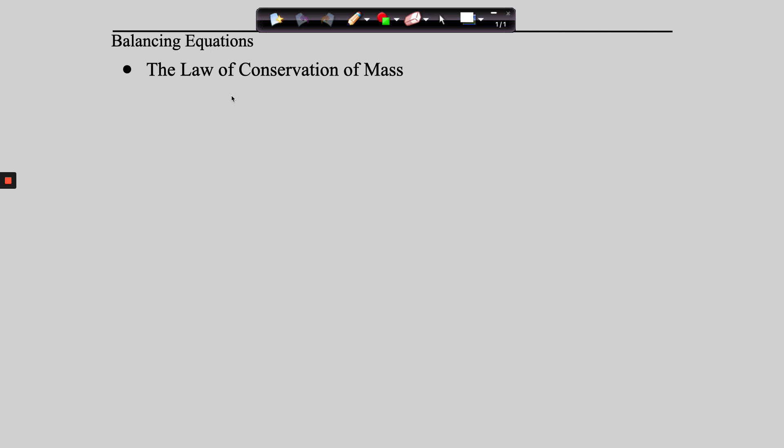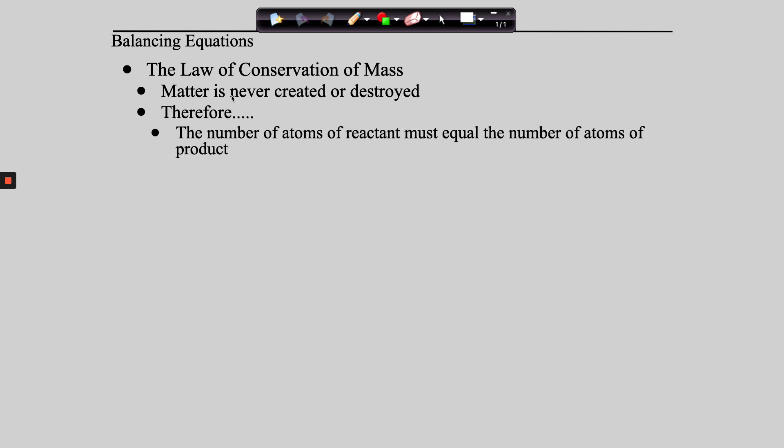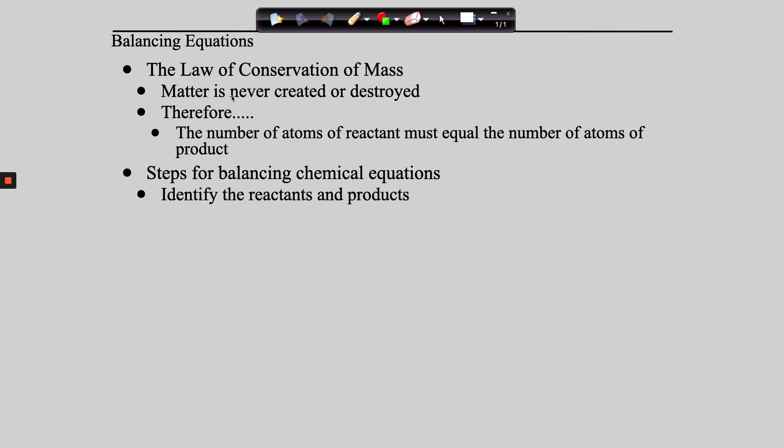Remember the law of conservation of mass? Matter is never created or destroyed. When we balance chemical equations, what we're actually doing is supporting the law of conservation of mass. Everything that goes in has got to come out, and everything that comes out has got to go in — we don't make or destroy matter. As a result, we have to balance equations. The number of atoms going in has to exactly match the number coming out, or we've broken the law of conservation of mass.